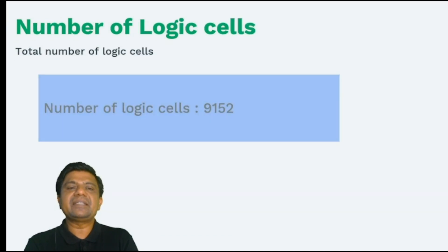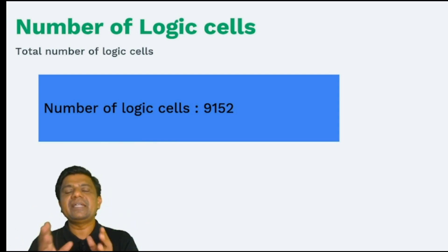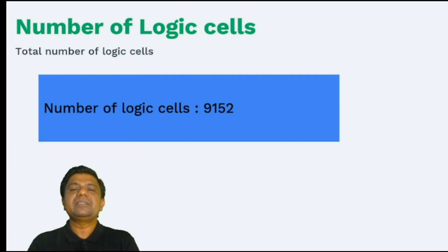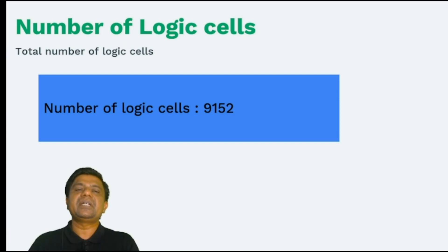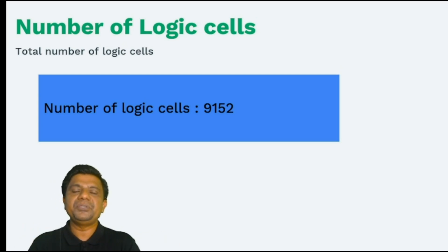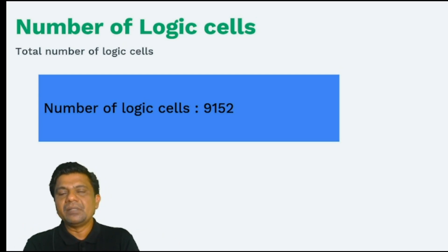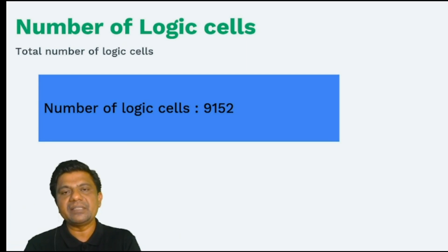From the datasheet, the number of logic cells is 9152. As stated, LX9 — the 9 indicates 9000 logic cells. If it is LX16, that FPGA has around 16,000 logic cells; LX25 has 25,000 logic cells. Depending on your design's requirement, you can choose the FPGA. If a design needs 4000 to 5000 logic cells, we can consider the Spartan 6 LX9. The thumb rule is to use 60 to 70% of the FPGA resources.